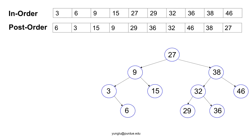Consider this binary tree — we have seen this binary tree before. Even though this is a binary search tree, we do not need to use the property of a binary search tree. The top of this slide shows the in-order and the post-order traversals. How can we reconstruct this binary tree from the information?